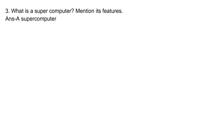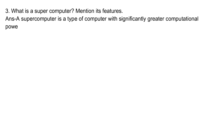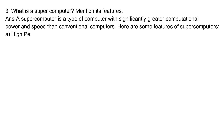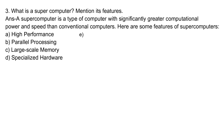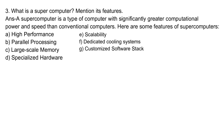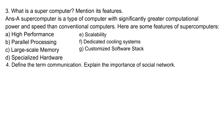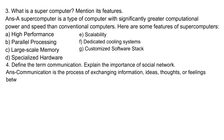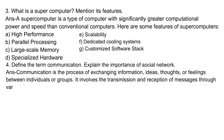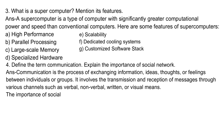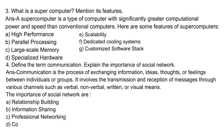Three: What is a supercomputer? Mention its features. Answer: A supercomputer is a type of computer with significantly greater computational power and speed than conventional computers. Features include: A: High performance; B: Parallel processing; C: Large-scale memory; D: Specialized hardware; E: Scalability; F: Dedicated cooling systems; G: Customized software stack.